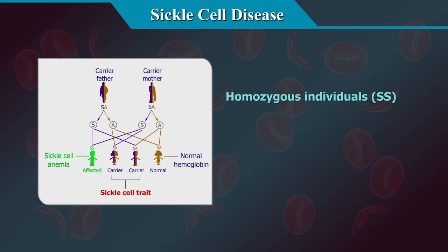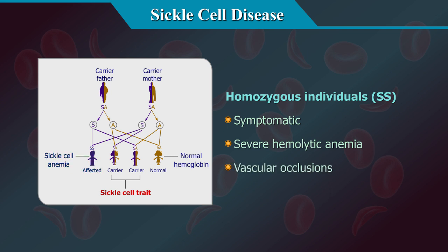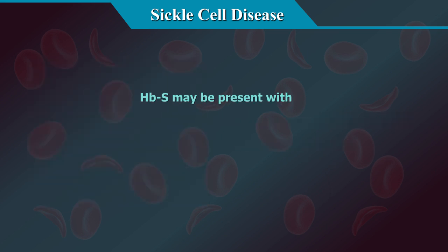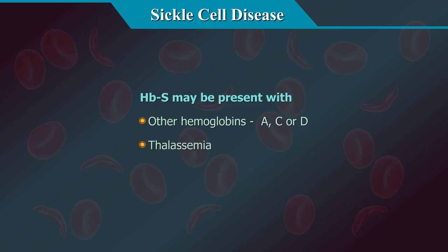Homozygous individuals commonly exhibit symptoms of severe hemolytic anemia and/or vascular occlusions, while heterozygous individuals are usually asymptomatic. HbS may be present with other hemoglobins such as hemoglobin A, C, or D, or with thalassemia, a condition that interferes with the synthesis of normal hemoglobin.